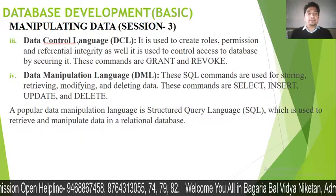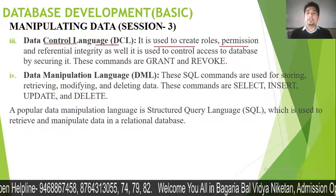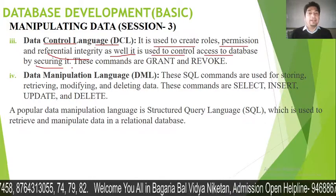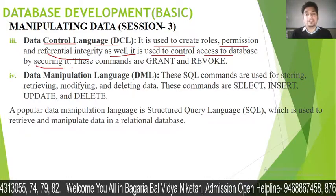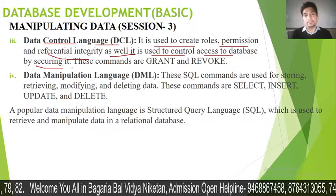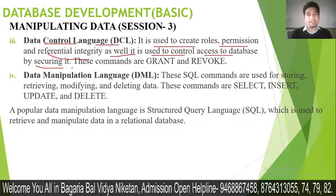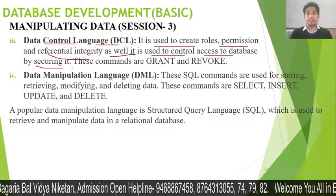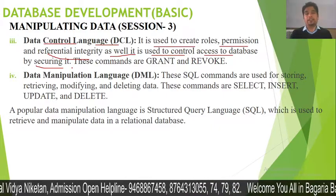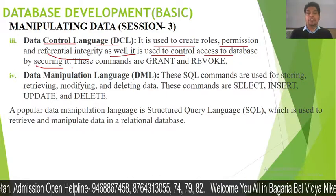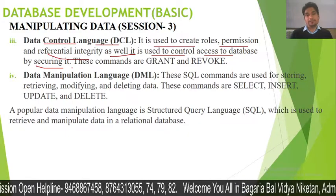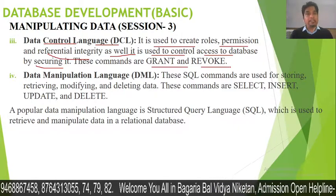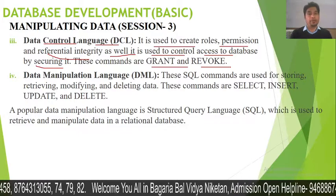Next is Data Control Language, DCL. It is used to create roles, permissions, and referential integrity, and to control access to the database by securing it. Referential integrity ensures that data in secondary tables is not accidentally deleted. DCL also handles grant and revoke, which are used to apply specific privileges on tables or columns.